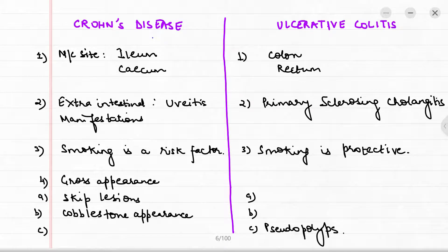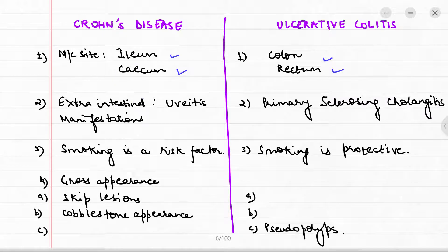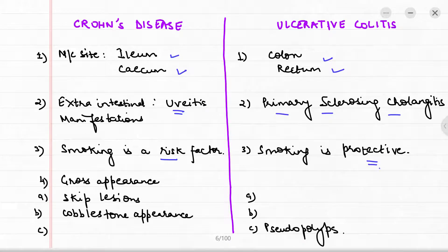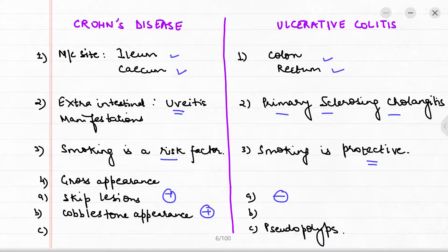To recap the key differences: the most common site in Crohn's disease is the ileum and cecum; in ulcerative colitis it is the colon and rectum. Extra-intestinal manifestations: uveitis in Crohn's, primary sclerosing cholangitis in ulcerative colitis. Smoking is a risk factor in Crohn's but is protective in ulcerative colitis. Skip lesions and cobblestone appearance are seen in Crohn's but not in ulcerative colitis; pseudo polyps are seen in ulcerative colitis but not in Crohn's.